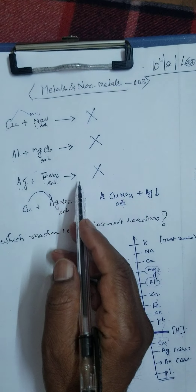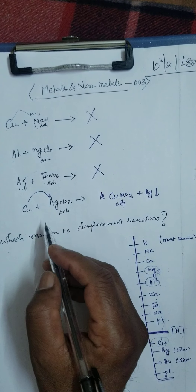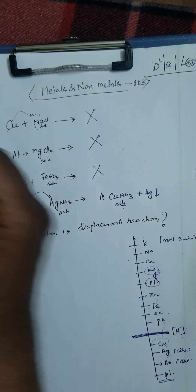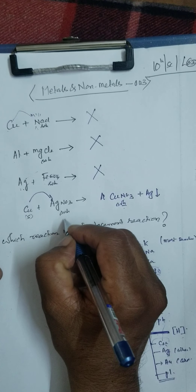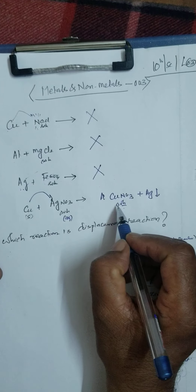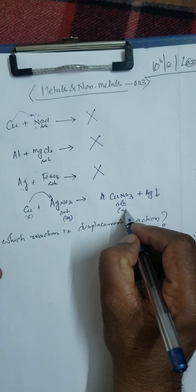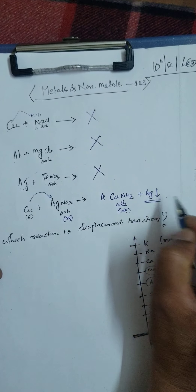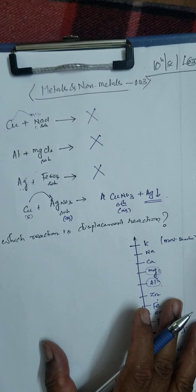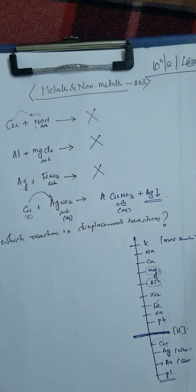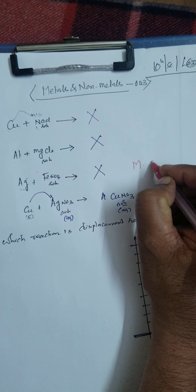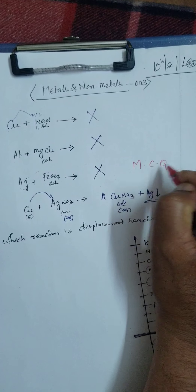This is the correct answer. Copper is solid, silver nitrate is aqueous, producing copper nitrate aqueous and silver as a black precipitate. This is the correct answer. Normally this type of question is asked in multiple choice questions for one mark.